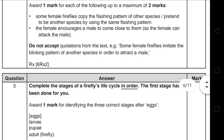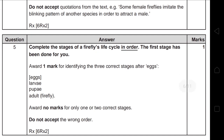Question 5 asks you to complete the stages of the firefly life cycle in order — the first stage has already been done for you. You must write three correct stages in order: larva, pupa, adult. Writing 'larva, pupa, firefly' is considered wrong. The three stages must be correct and in the correct order.